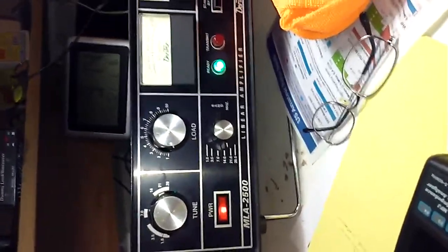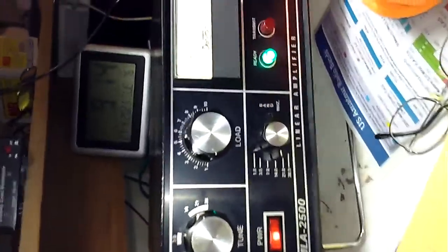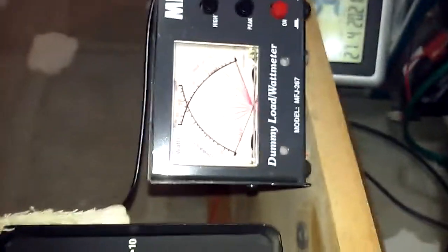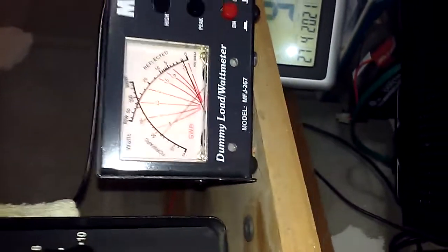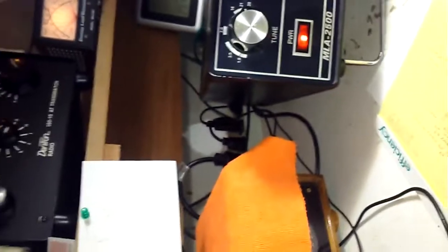Here we are with the Dentron MLA 2500. Peak envelope power, WB9TH. And that's going up to 500 watts peak envelope power.